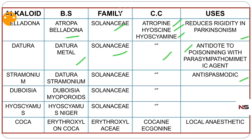Next is stramonium, also from the same family Solanaceae. Most of the drugs here are under Solanaceae, except coca. Stramonium's biological source is Datura stramonium. Its chemical constituents are the same — atropine, hyoscine, and hyoscyamine — so the uses are the same as well.